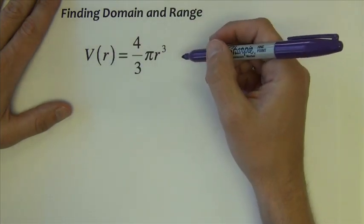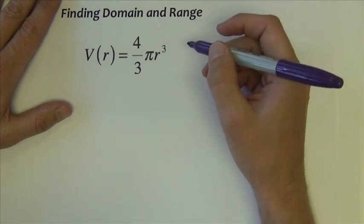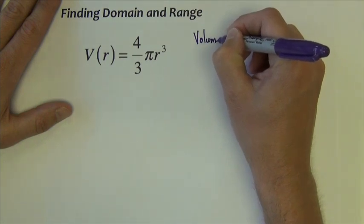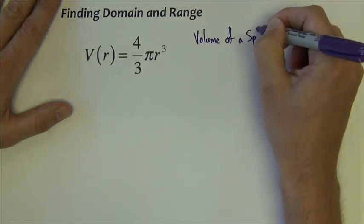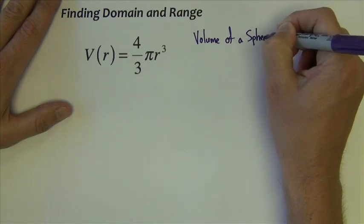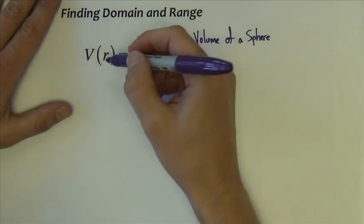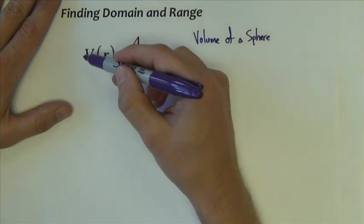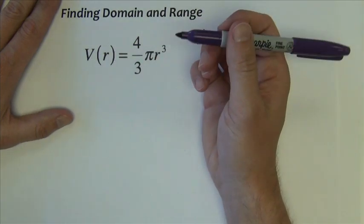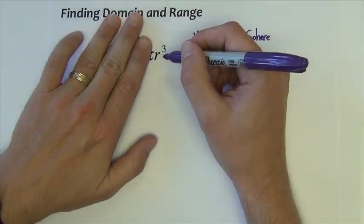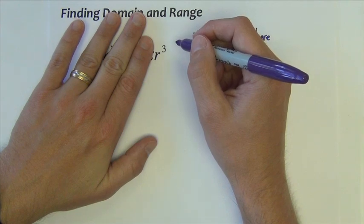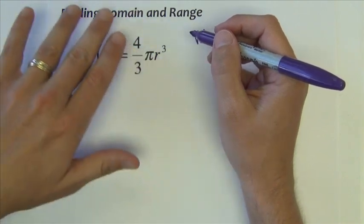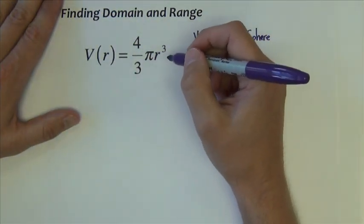There's sometimes a domain inherent in the problem that we have to consider. For instance, if you look at this particular function or this particular formula, we should be able to recognize that this formula finds the volume of a sphere. Now notice, so here the r is like the x, it's the independent variable. The V is like the y, so V of r is kind of like f of x. Notice that the r here has no square root above it, has no divide, and we're not dividing by any r's, so the two cases we had prior to this wouldn't really apply here.